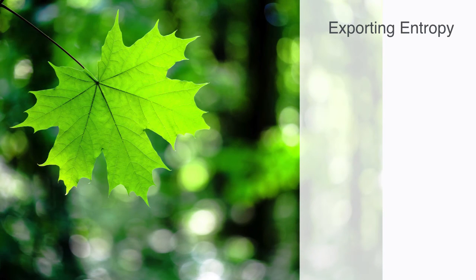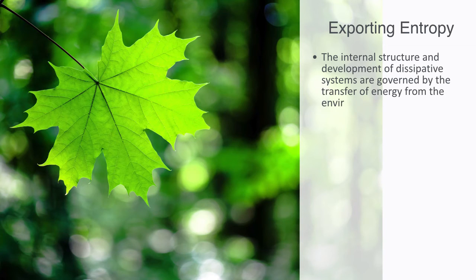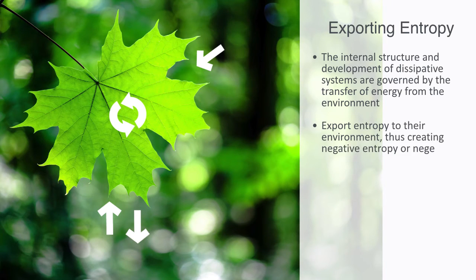According to the theory of dissipative structures, an open system has a capability to continuously import free energy from the environment and at the same time export entropy. The internal structure and development of dissipative systems, as well as the process by which they come into existence, evolve and expire, are governed by the transfer of energy from the environment. Unlike isolated systems or closed systems in a broader sense, which are always on the path to thermodynamic equilibrium, dissipative systems have a potential to offset the increasing entropy trend by consuming energy and using it to export entropy to their environment, thus creating negative entropy or negentropy.